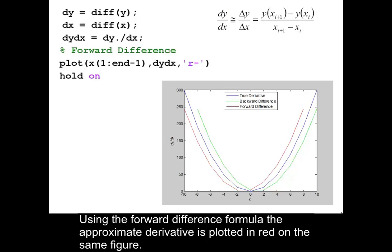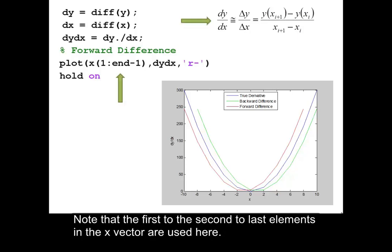Using the forward difference formula, the approximate derivative is plotted in red on the same figure. Note that the first to the second to last elements in the x vector are used here.